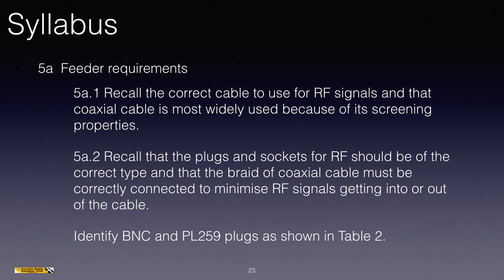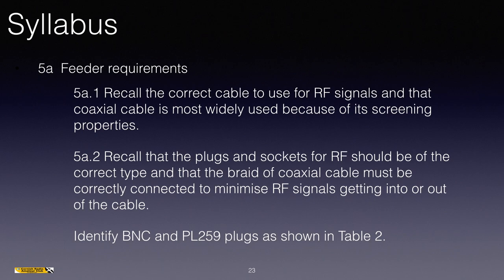Let's look at the syllabus again. 5A1: recall the correct cable to use for RF signals and that coaxial cable is most widely used because of its screening properties. We've covered that — because it keeps the RF energy within the braid on the inside, it's less likely to interfere with other items and it's easy to route through things like walls. Whereas balanced feeder, while it performs well when straight and away from objects, is easily perturbed by adjacent objects.